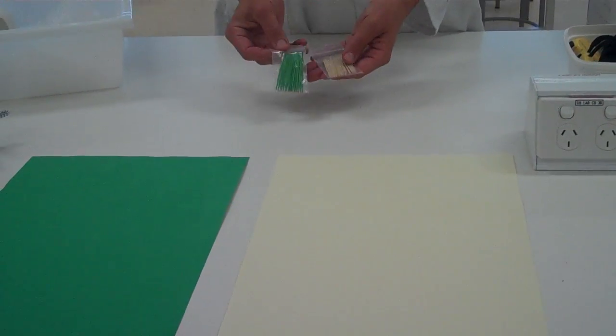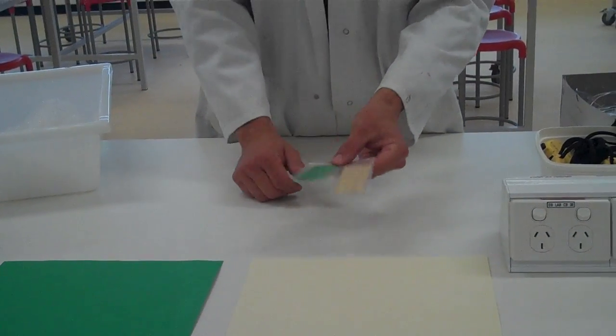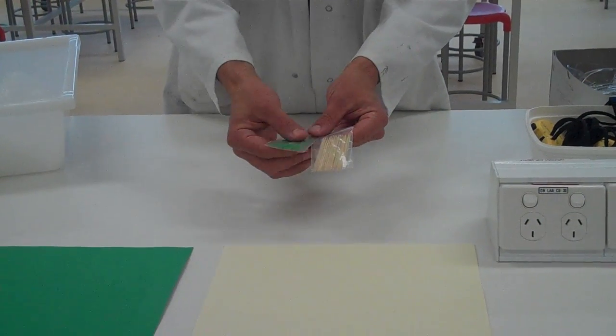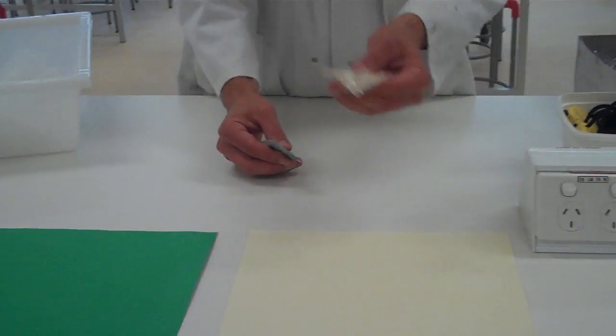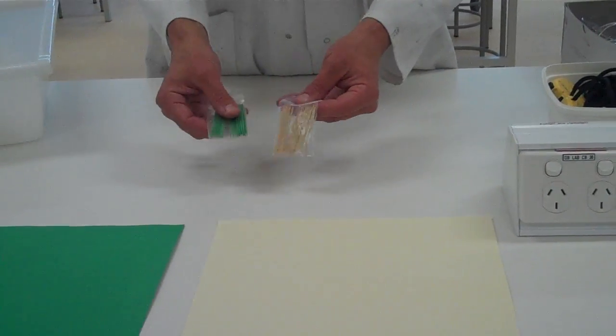And likewise, we have two packets of toothpicks, each with 20 of them in it. These are meant to represent the mutant caterpillars or worms. These are meant to represent the normal coloring. So there's 20 of each.